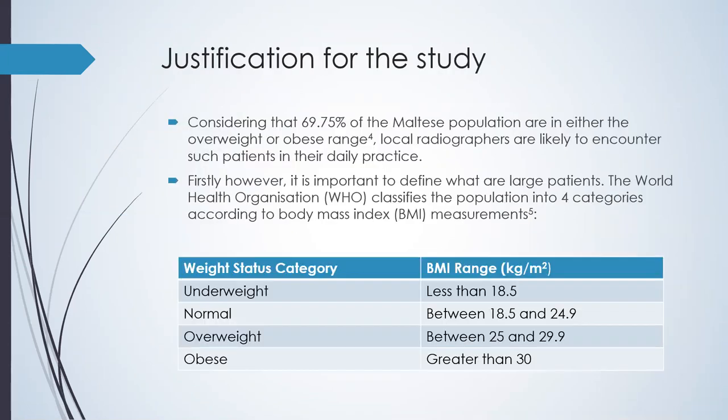As for justification for this study, considering that 69.75% of the Maltese population are either in the overweight or obese range, local radiographers are likely to encounter such patients in their daily practice. It is important that we define what large patients are. The World Health Organization classifies the population into four main categories according to BMI measurements: underweight, normal, overweight, and obese, with BMI ranging from 18.5 or less for underweight, between 18.5 and 24.9 for normal, between 25 and 29.9 for overweight, and greater than 30 for obese.